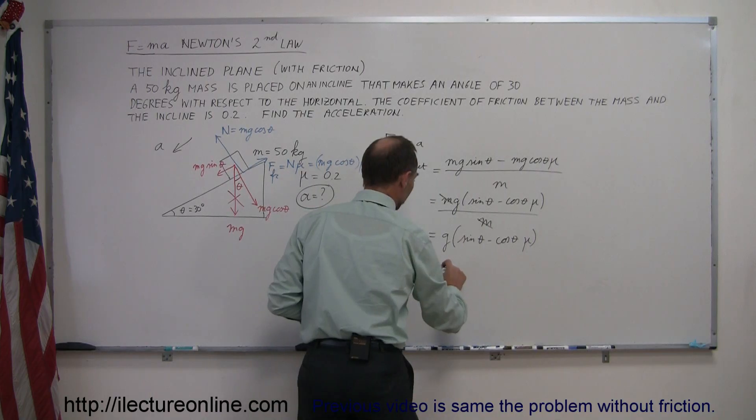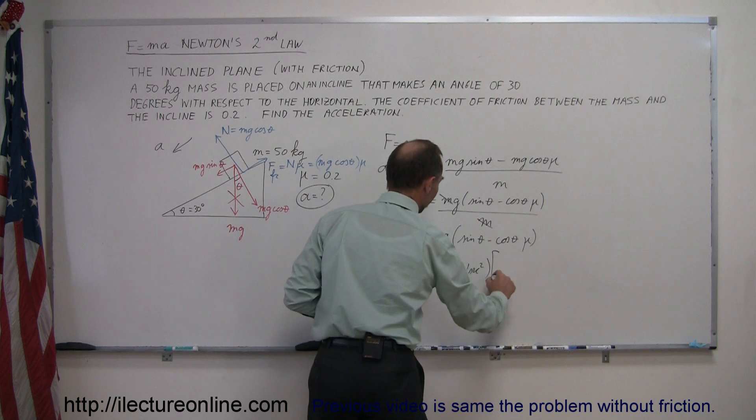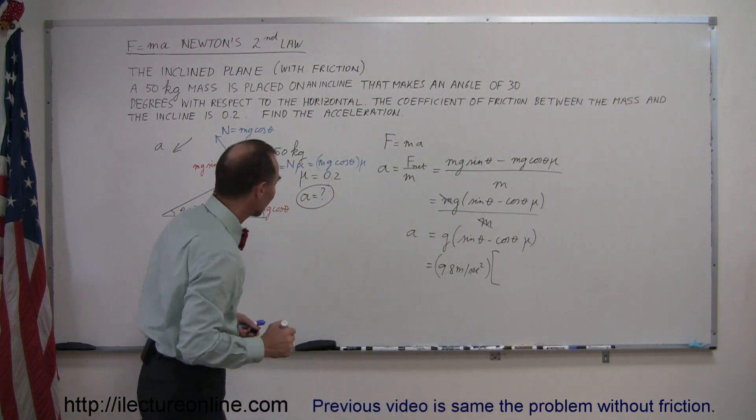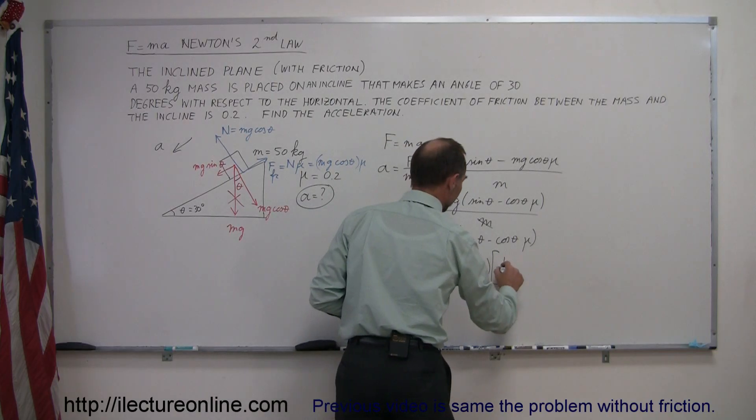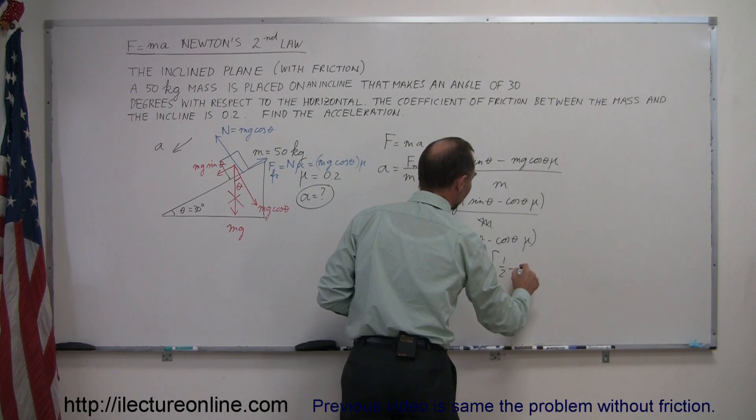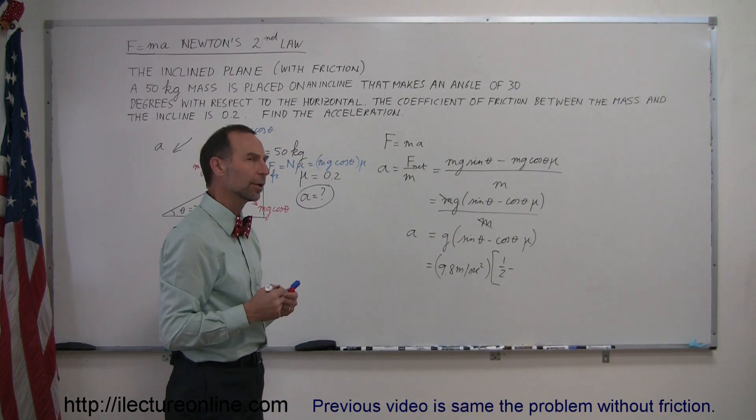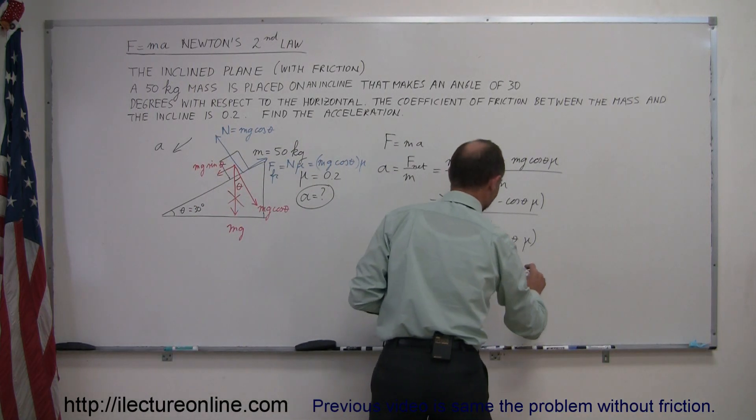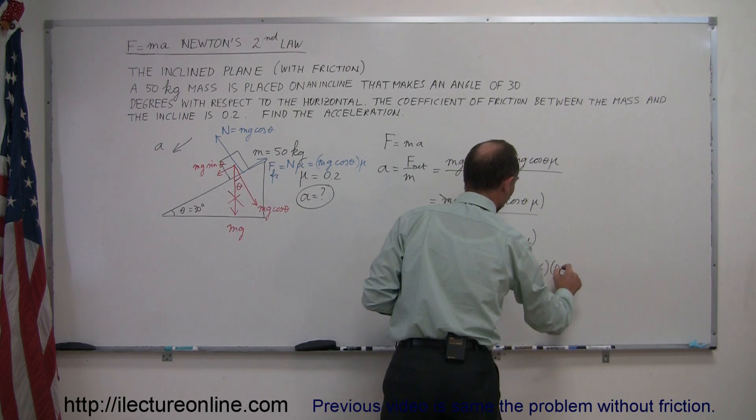So, this is equal to 9.8 meters per second squared, acceleration due to gravity, times the sine of theta, now the sine of 30 degrees, that's equal to 1 half, minus the cosine of theta, now the cosine of 30 degrees is equal to 0.866, so 0.866 times mu, which is 0.2.